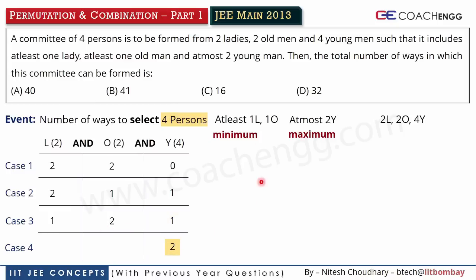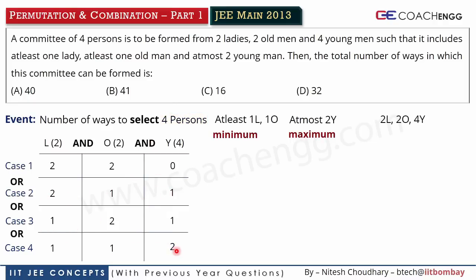In the fourth case — Y = two — we need to select four total. At least one lady and at least one old man means minimum one each. Adding those minimums: two young men plus one lady plus one old man equals four. This means I cannot take zero old men or zero ladies — I cannot neglect either group. I cannot take two ladies and zero old men. That would only be possible if the at least condition were not given in the question.